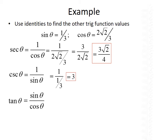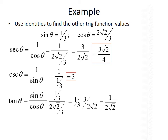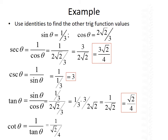Next, we find tangent of theta. Using the quotient identity, tangent equals sine over cosine, so that's 1/3 divided by 2 root 2 over 3. To divide fractions, we multiply by the reciprocal: 1/3 times 3 over 2 root 2. Multiplying across and canceling the 3s gives 1 over 2 root 2. Rationalizing gives root 2 over 4. Finally, cotangent of theta is 1 over tangent, so that's 1 over (root 2 over 4). Taking the reciprocal gives 4 over root 2. Rationalizing by multiplying by root 2 gives 4 root 2 over 2, which reduces to 2 root 2.